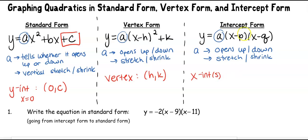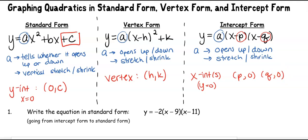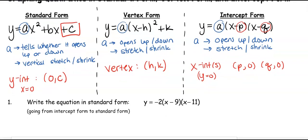What's unique about intercept form is that it shows us the x-intercepts. We have one x-intercept at (P, 0) and another at (Q, 0). X-intercepts have a y-value of 0. So our three different forms each tell us about 'a' but each gives us a little bit different additional information.